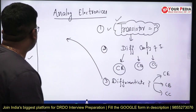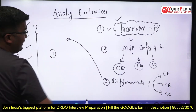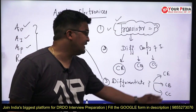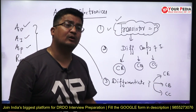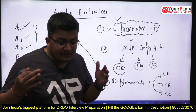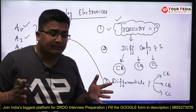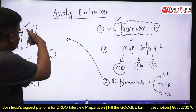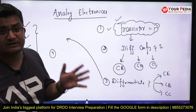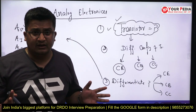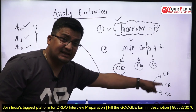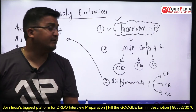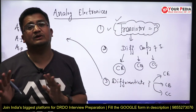The fourth question they can ask is: how do you decide whether to use common emitter, common base, or common collector configuration? Then you should say: sir, it depends upon the application or industrial process requirement. We will look at these parameters — voltage gain, current gain, input resistance, output resistance — and whichever configuration satisfies all the parameter requirements for that industry or plant, we will go with that configuration. That is how your answer should be framed.